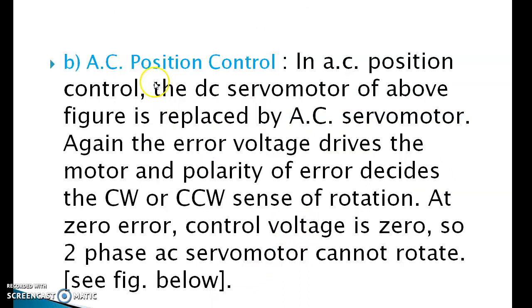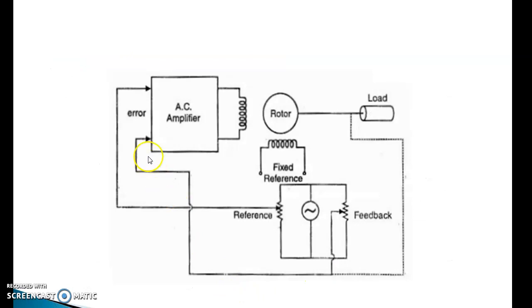Second, AC position control. In AC position control, the DC servo motor of the above figure is replaced by AC servo motor. Consider again the error voltage drives the motor. Polarity of error decides the clockwise or counterclockwise sense of rotation. At zero error, control voltage is zero, so motor cannot rotate.